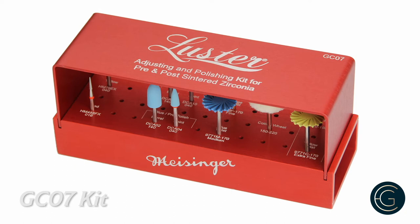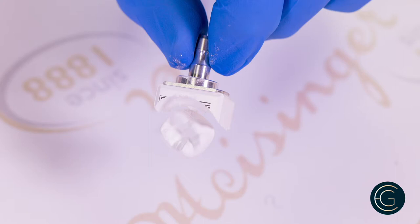We're going to use the GC07 kit to pre-polish the zirconia in the green state here before we sinter it. We get a really nice finish on this and it makes delivery so much easier.